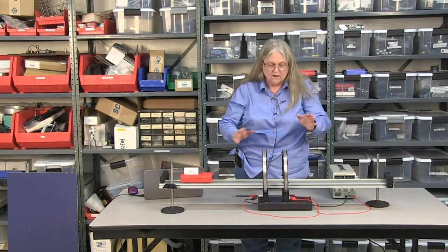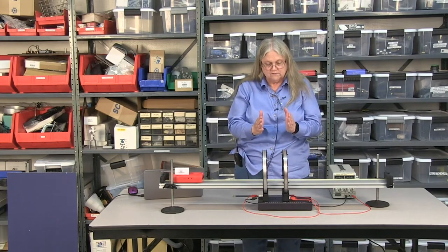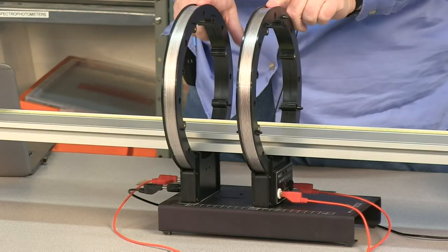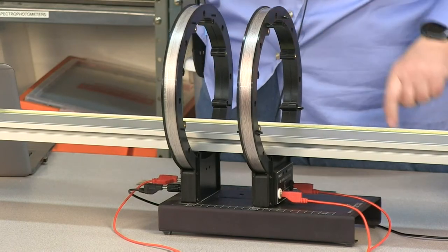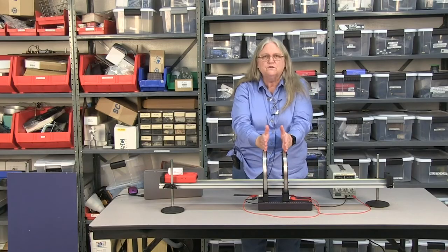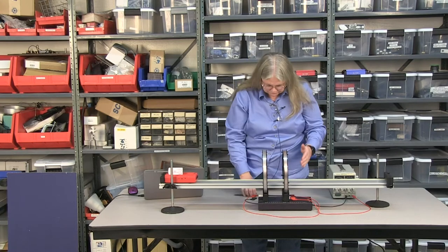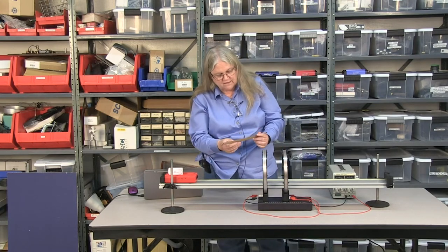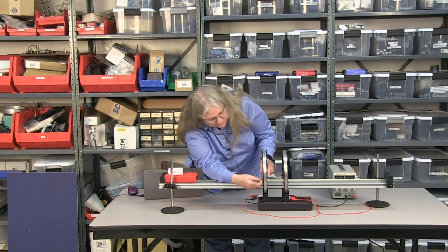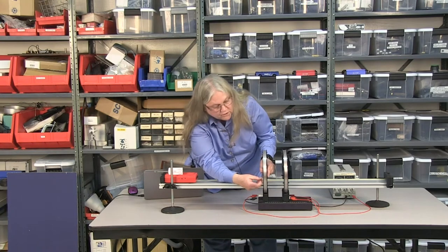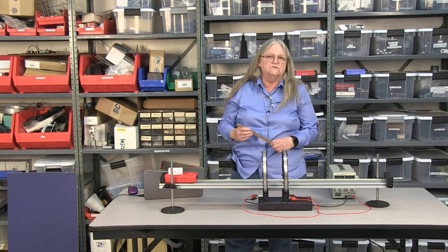Helmholtz coils are two coils with the same number of turns on them. These have 500 turns on each coil, and they're a particular distance apart. If you take the diameter of this from center of the coil to center of the coil, it's 21 centimeters.